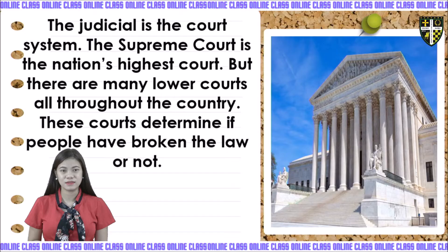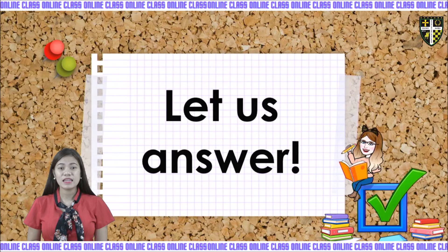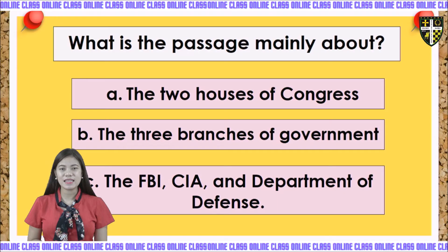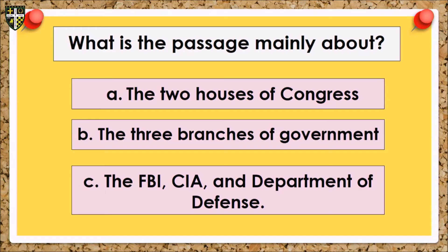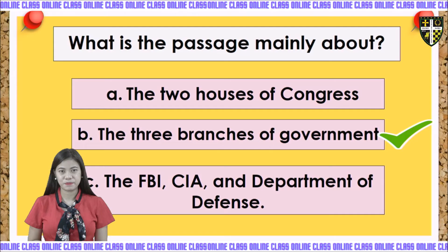Now, for you to understand more, let us answer our book. Here's the first question: What is the passage mainly about? A, the two houses of Congress. B, the three branches of government. Or C, the FBI, CIA, and Department of Defense. The answer is letter B, the three branches of government.